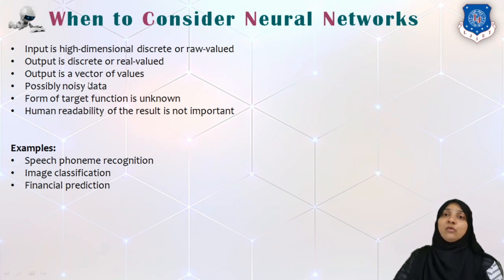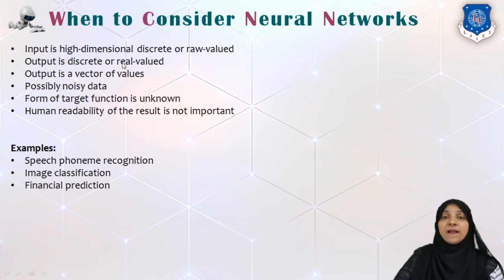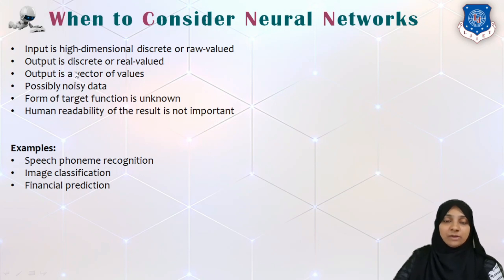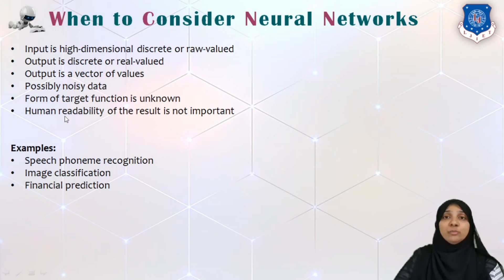In what cases are we going to use neural networks or simply ANNs? When input is very high dimensional, discrete, or very raw, we can go with ANNs. When output is discrete or real-valued, or a vector, when there is noisy data, when the target function is not known, and when human interpretability of the result is not important — in all those cases we can go with neural networks.